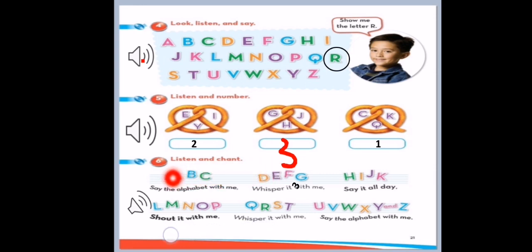A, B, C. Say the alphabet with me. D, E, F, G. Whisper it with me. H, I, J, K. Say it all day. L, M, N, O, P. Shout it with me. Q, R, S, T. Whisper it with me. U, V, W, X, Y, and Z. Say the alphabet with me. Say the alphabet with me.